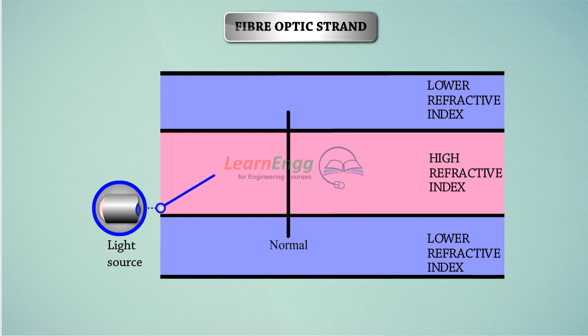If the angle of incidence is greater than the critical angle, the light will be reflected with no refraction. This is what is known as total internal reflection.